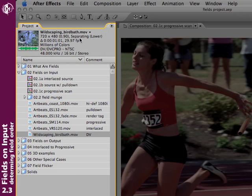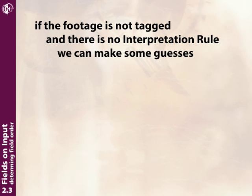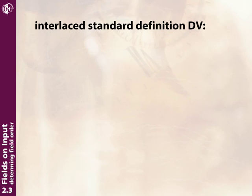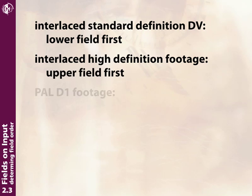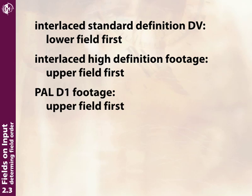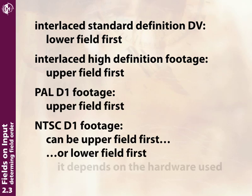There are occasions when After Effects will be wrong — for example, if the footage was actually captured progressive scan. Now, if After Effects doesn't have a tag or an interpretation rule, we can make pretty intelligent guesses ourselves. All standard-def DV footage, NTSC or PAL, is lower field first. On the other hand, all interlaced high-def footage, such as 1080-line footage, is always upper field first. PAL-D1 is also always upper field first. NTSC-D1 is the tricky one — it can be either upper or lower field first depending on what capture card was used, usually lower but not always.